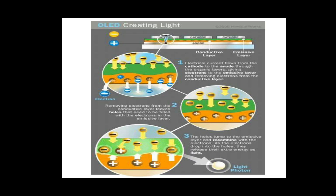This is how light is created in the OLED, shown in three figures. In figure one, the electric current flows from the cathode to the anode through the organic layers, giving electrons to the emission layer and removing electrons from the conducting layer. In figure two, removing electrons from the conducting layer leaves holes that need to be filled with electrons from the emission layer. In the last diagram, the holes jump to the emission layer and recombine with the electrons. As the electrons drop into the holes, they release their extra energy as light.